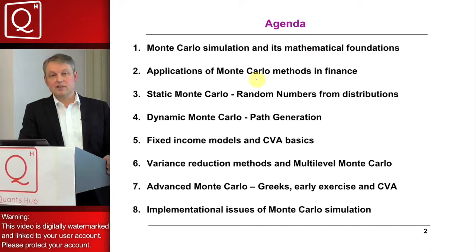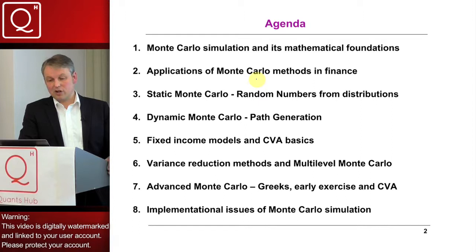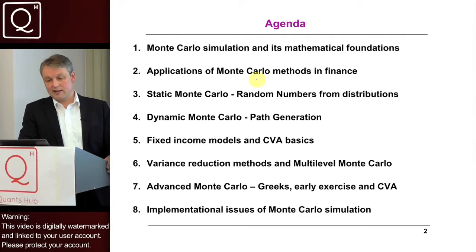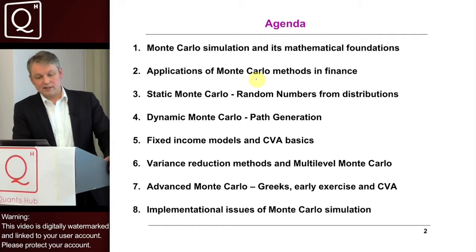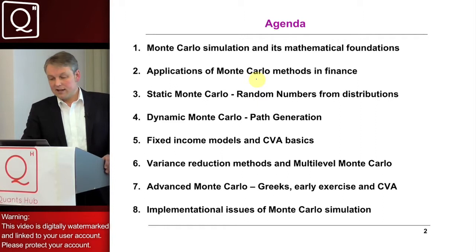Then we consider variance reduction techniques. We wish to keep the number of simulations as small as possible, which means we have to study methodologies for reducing the number of simulations. Since the overall error level is given by the square root of the number of simulations, we need to reduce the sample variance. We study the most relevant variance reduction methods — simple ones like antithetic sampling, but also more complex ones like importance sampling and control variates — with applications for each.